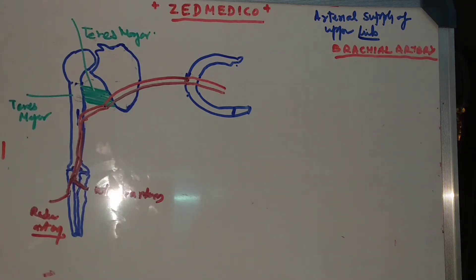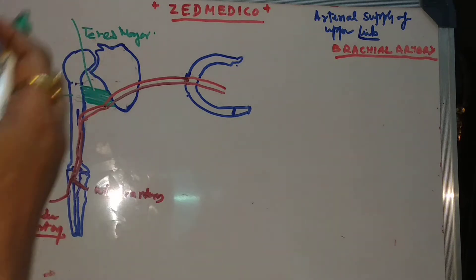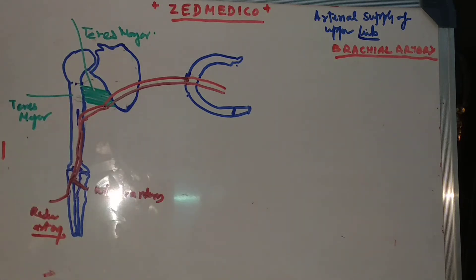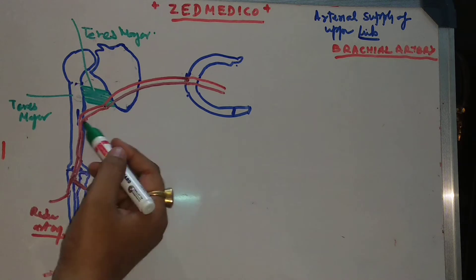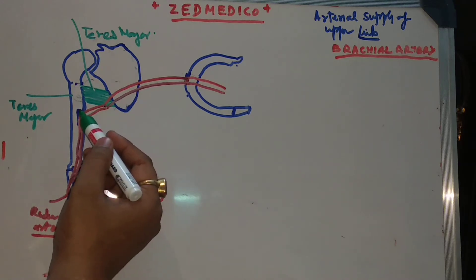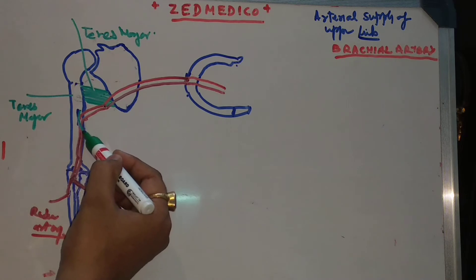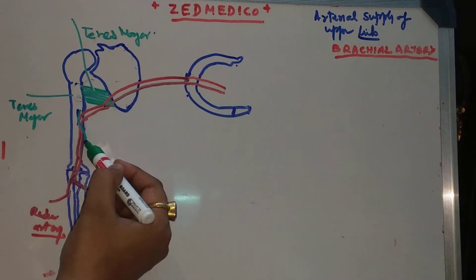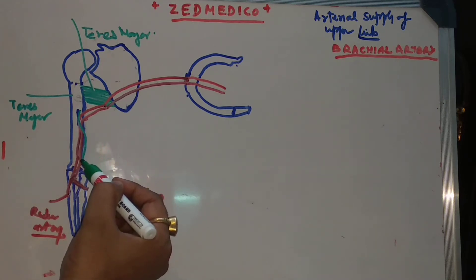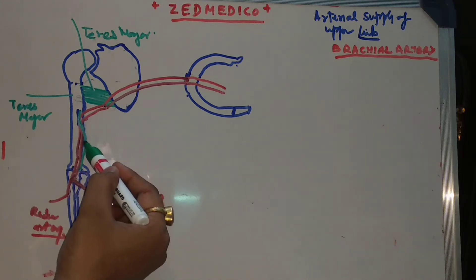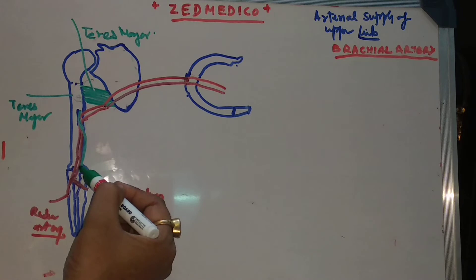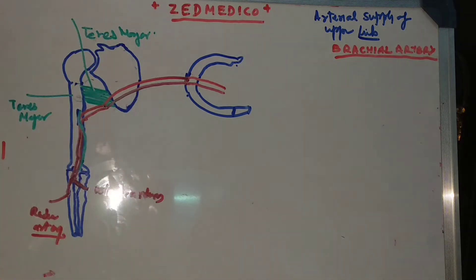Brachial artery lies very close to the median nerve. In the initial part, the median nerve lies lateral to the brachial artery, and gradually it becomes medial to the brachial artery. So the brachial artery lies in very close vicinity of the median nerve.